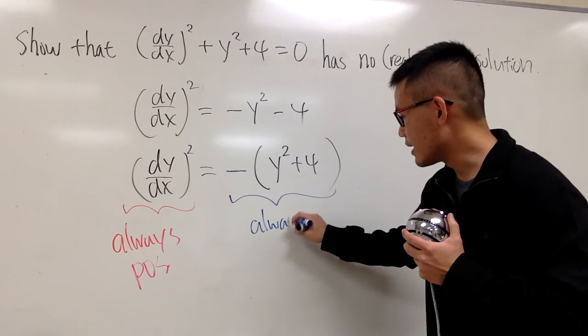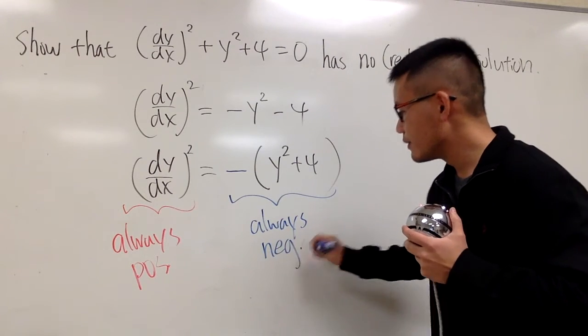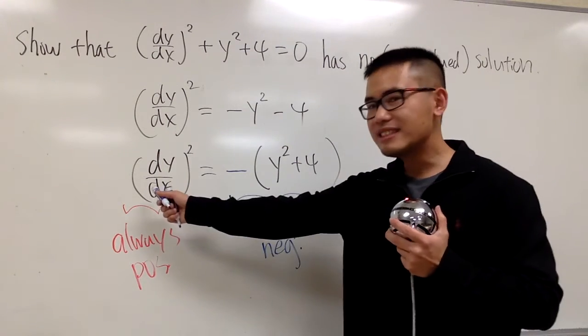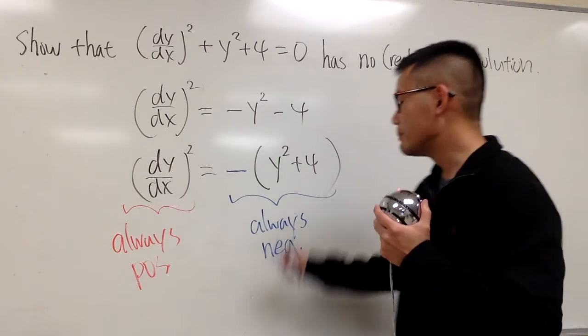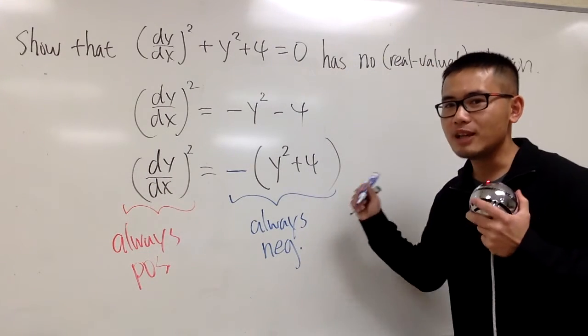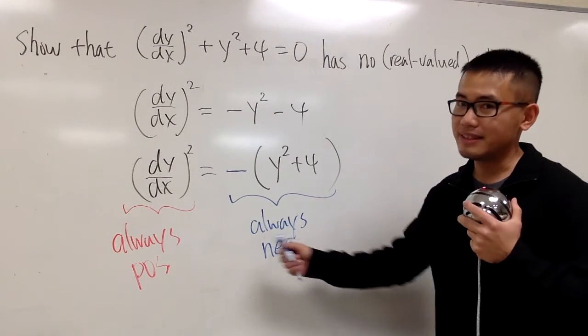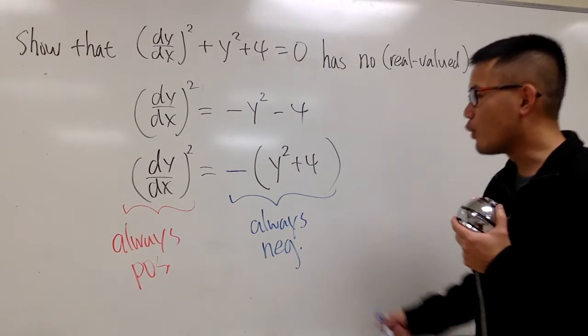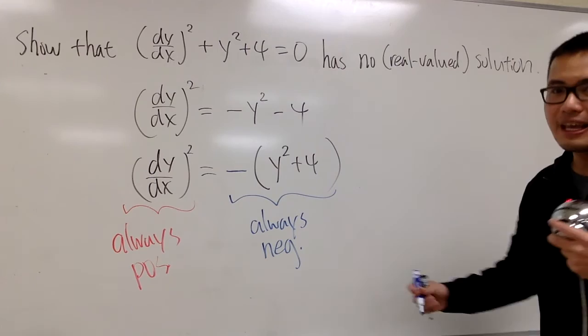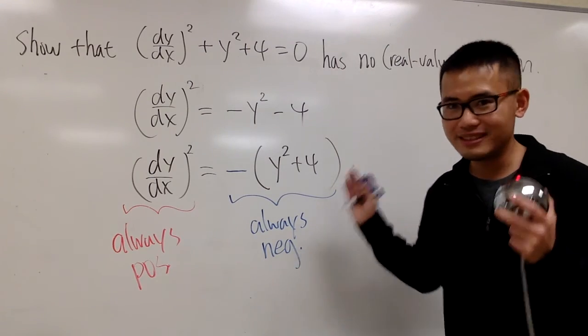So let me just write this down. Always negative. On the left-hand side, you have something that's always positive, but on the right-hand side, you have something that's always negative. That is a contradiction. So of course, this right here has no answer. And that's how you're going to show it. That's it.